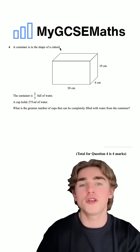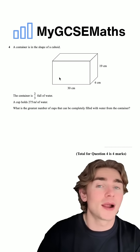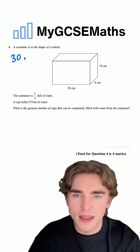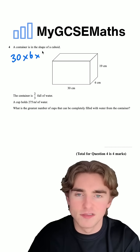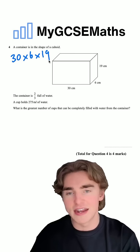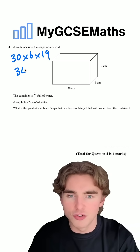So step number one, working out the total volume of the cuboid. To work out the volume of a cuboid, we do base times width times height. So we're going to do 30, the base times by six times by 19. I'm going to bring that into the calculator, 30 times six times 19. That is going to give us 3,420.